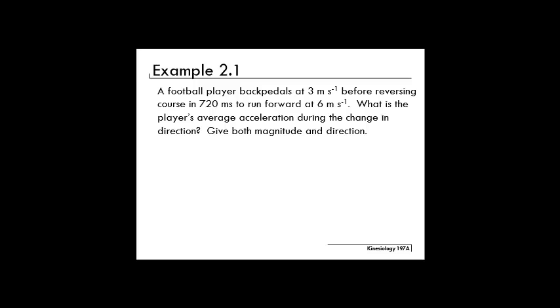So the football player starts off running backwards, and then he turns around so that he's running forward, and that happens in 720 milliseconds. You're asked to find average acceleration. We know that average acceleration is a change in velocity divided by the time that it took to change the velocity.